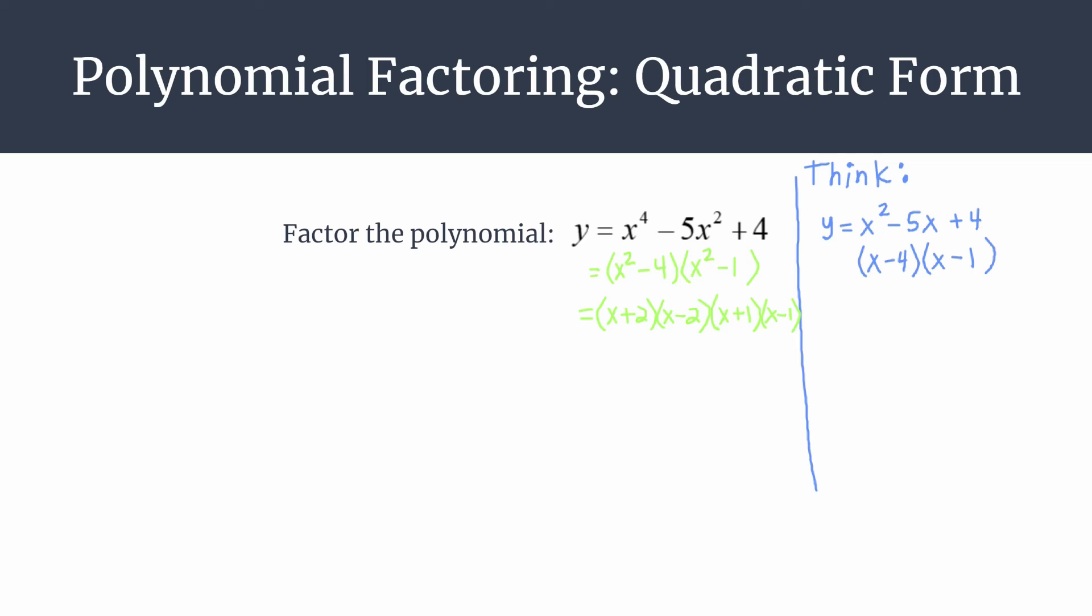When you want to double check that you correctly factored the difference of squares, you'll notice your outer and inner terms cancel. Those are the terms with x - a minus 2x cancels with a positive 2x, so you know you have it successfully factored.